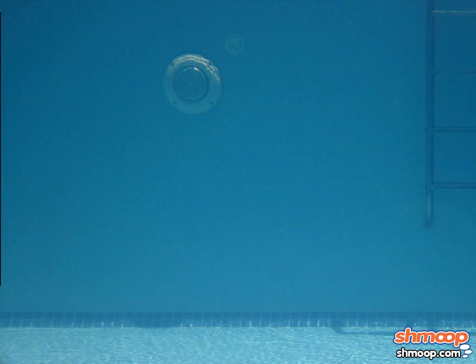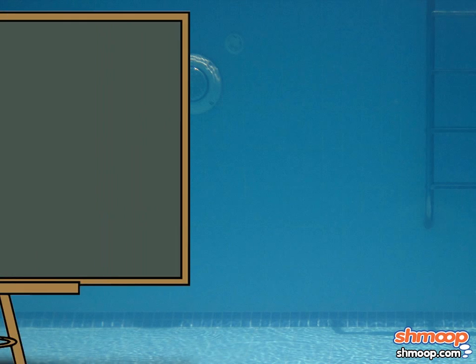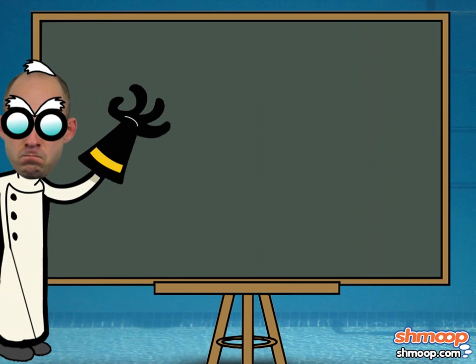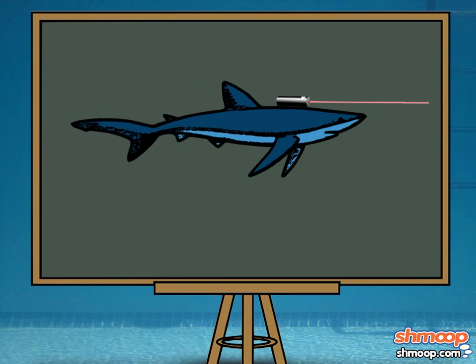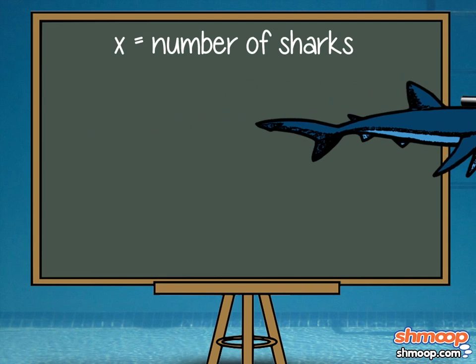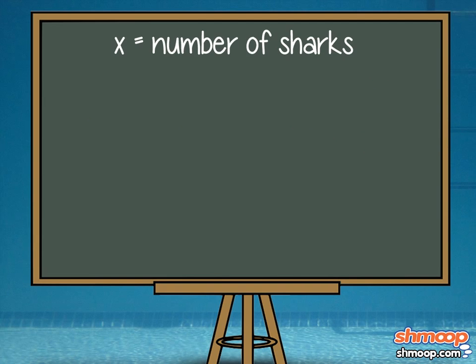As always, we'd like to have a formula to help us solve the problem, so we first need to determine the variable. Because we're trying to figure out the original number of sharks, we're going to substitute that value with x. In the beginning, there were x number of sharks. Then half were eaten by flesh-eating bacteria — we'll write that as x over two.